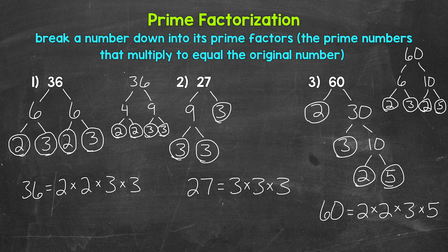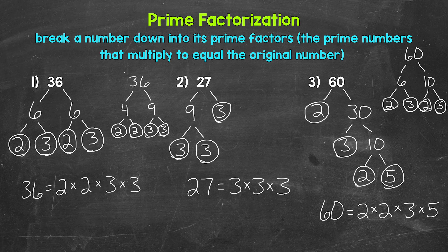Moving on to number 2, we have 27. The factors we can use to break this down are 3 and 9, and we end up with 3 times 3 times 3. For number 3, we have 60. 60 has a handful of factors we can start with: 2 and 30, 3 and 20, 4 and 15, 5 and 12, or 6 and 10. No matter how you did it, you should have 2 times 2 times 3 times 5.